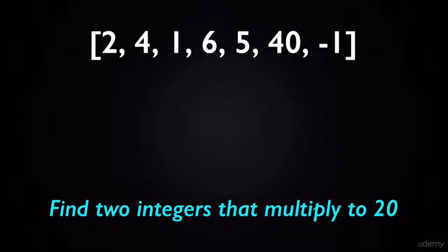Suppose you're given this problem in which you're supposed to write a function that takes an array of integers and finds two integers out of that array that multiply to 20 together. So with this example, with this given array, you can see that 4 and 5 here multiply to 20 together. So that's the pair you need to find.